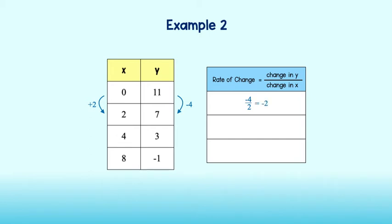Keep going. From 7 to 3, we subtract 4, and from 2 to 4, we add 2. Again, we get a rate of change of negative 4 over 2, or negative 2.